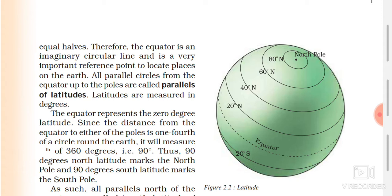Since the distance from the equator to either of the poles is one-fourth of a circle around the Earth, that distance is 90 degrees. Thus, 90 degrees north latitude marks the north pole and 90 degrees south latitude marks the south pole.